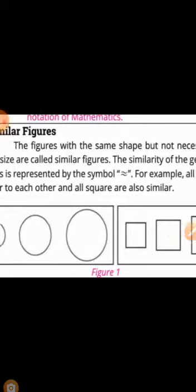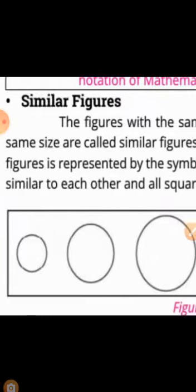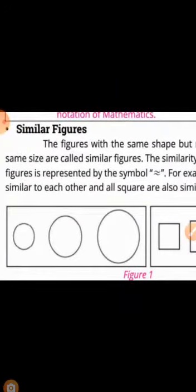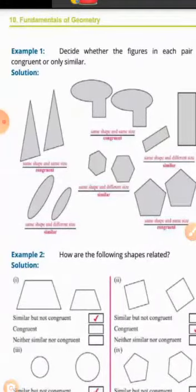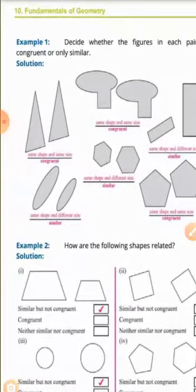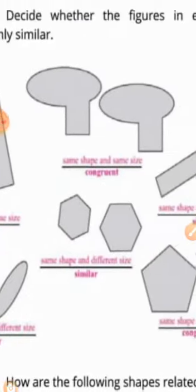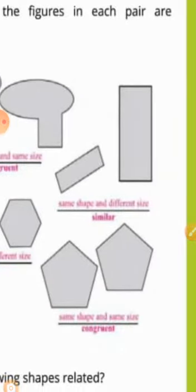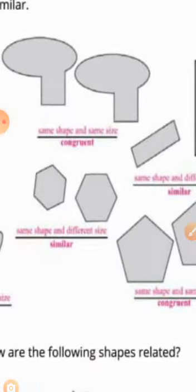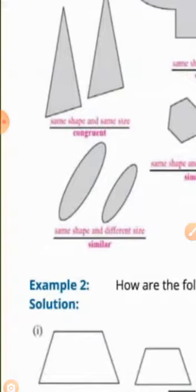Similar figures کی definition: The figures with the same shape but not necessarily the same size are called similar figures۔ Similar figure کے لیے صرف ایک condition کافی ہے — shape same ہو، size different ہو سکتا ہے۔ Congruent کے لیے دو conditions ضروری ہیں: size بھی same اور shape بھی same۔ For example, all circles are similar to each other and all squares are also similar۔ Examples میں پہلی دو figures congruent ہیں، تیسری اور چوتھی similar ہیں کیونکہ same shape but different size۔